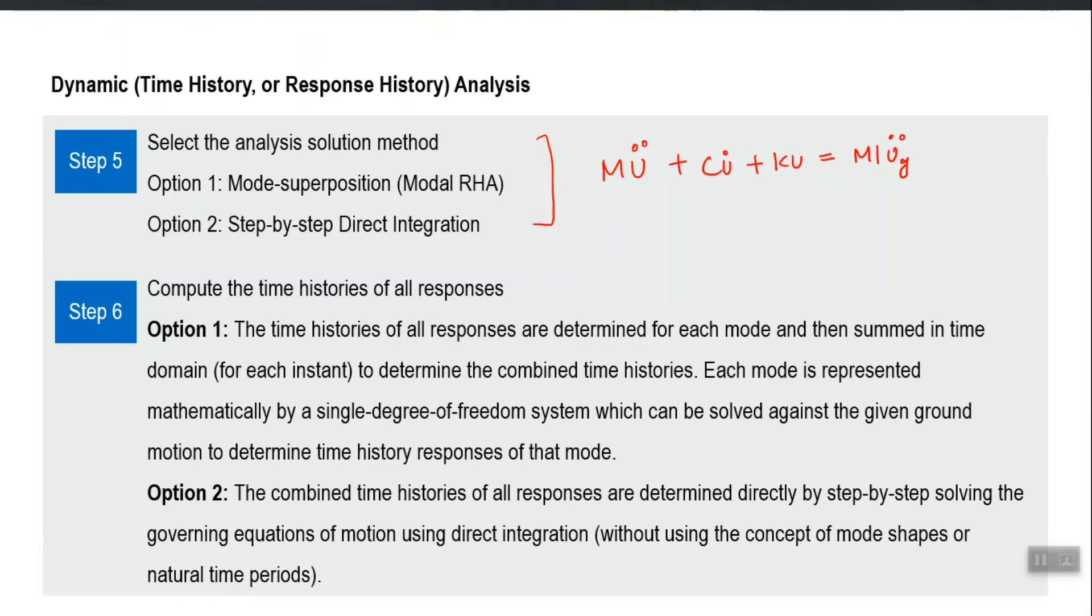It is combining the peaks of different modes to get a resultant peak which is always positive. Here not only can the peak be negative also, but it will give you the complete time history if the earthquake was 50 seconds, all the responses computed will be for 50 seconds.